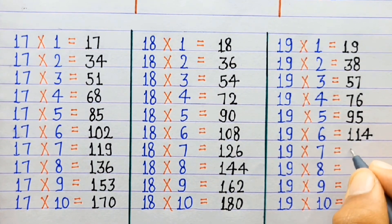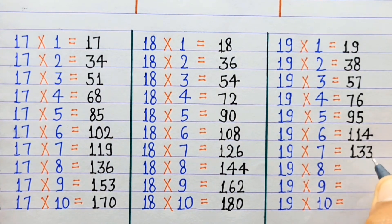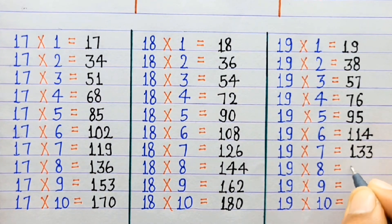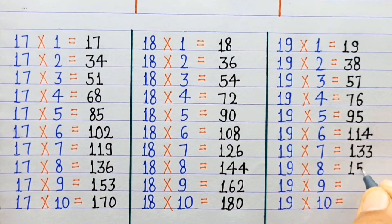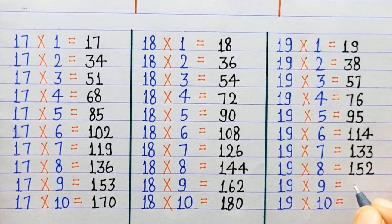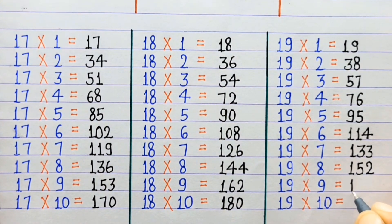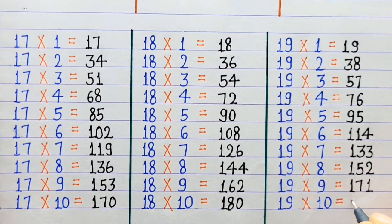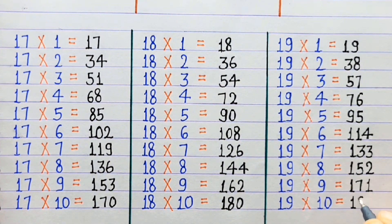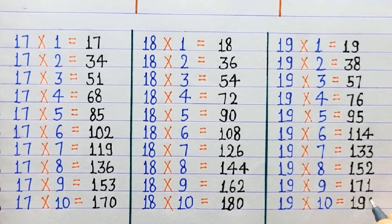19×7=133, 19×8=152, 19×9=171, 19×10=190.